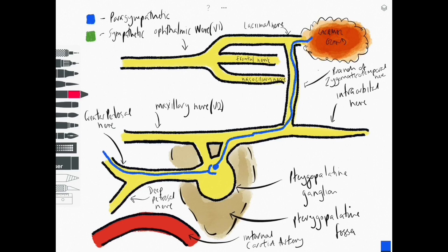So they synapse in the ganglion, postganglionic fibers here seen in blue then leave the ganglion, hitchhike a ride along some of those trigeminal nerve fibers eventually to reach the lacrimal nerve to supply the gland.